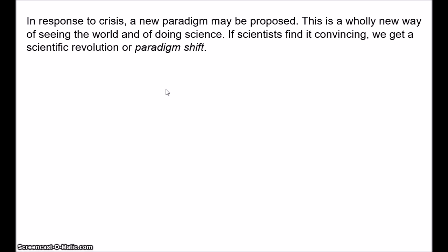According to Kuhn, rejection of a paradigm only occurs when we have two conditions: firstly, nagging anomalies have accumulated — anomalies that scientists find troubling; and second, a new paradigm is proposed. This contrasts with Popper and the falsificationists. According to Kuhn, we don't immediately throw out theories in the face of anomalies. Scientists will persist with a quite bad paradigm if it faces a few problems or if there are no alternatives. Perhaps another way of putting this is to say that the precession of Mercury's perihelion and the Michelson-Morley experiment only became a falsifier of the older physics once Einstein's alternative was proposed.